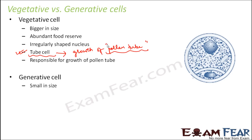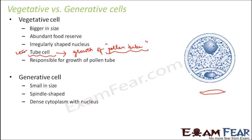The generative cell is smaller in size when compared to the vegetative cell. It has a fixed shape and is spindle shaped, as you can see here. It has a dense cytoplasm with a distinct nucleus. It floats in the cytoplasm of the vegetative cell, which is quite obvious because the vegetative cell engulfs it, so it is obviously inside the vegetative cell.